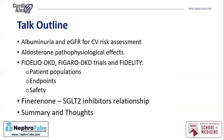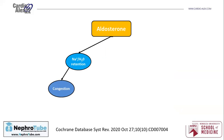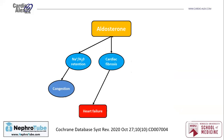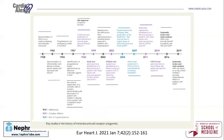What about aldosterone's pathophysiological effects and why is it dangerous? Aldosterone can cause sodium and water retention, which leads to congestion. There is evidence that it causes cardiac fibrosis, which leads to heart failure. Aldosterone may also cause vascular damage, leading to hypertension and renal fibrosis. Renal fibrosis will lead to more hypertension, and both will contribute to chronic kidney disease. That's why aldosterone is a key player in cardiac and renal damage, and many studies have tried to find a blocker for its pathological activity.